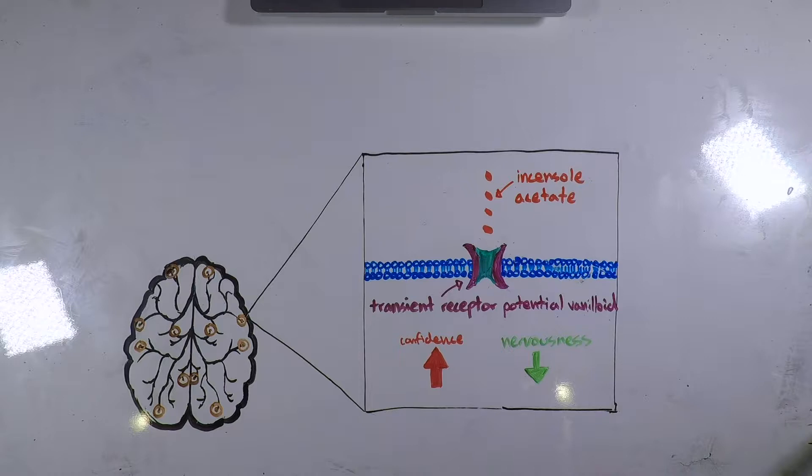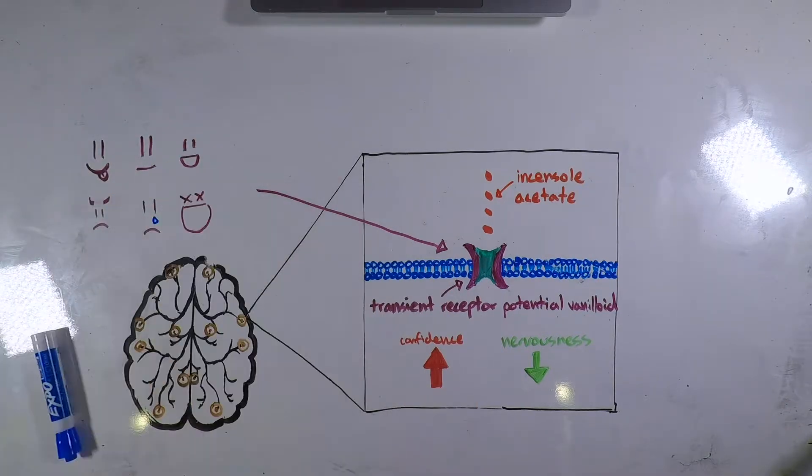While the exact role of TRPV3 is unknown, studies show that they have something to do with your brain's emotional regulation, controlling your feelings.